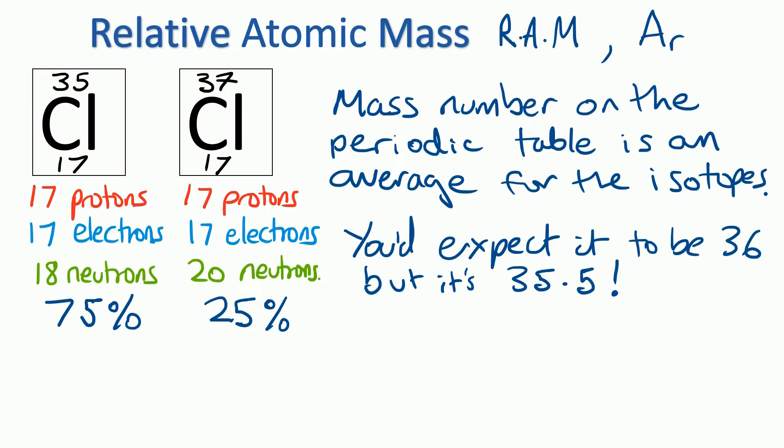So that's why the average is nearer to chlorine-35, because there's more atoms that are chlorine-35. Don't worry about the numbers at this stage, I'm going to show you an easy way of how to get your head around the numbers.